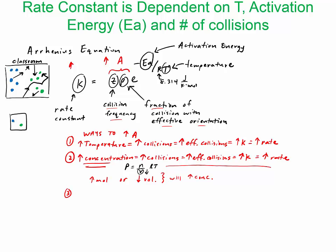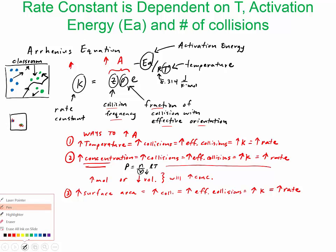One more thing you can do is chop up the reactants — or powder them — into tiny pieces. What you've done is improve the surface area of the reactants. This improves their chances of colliding and also improves their effective collisions, which increases the rate constant K and increases the overall rate.